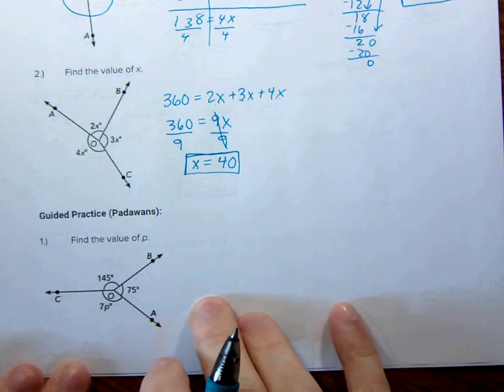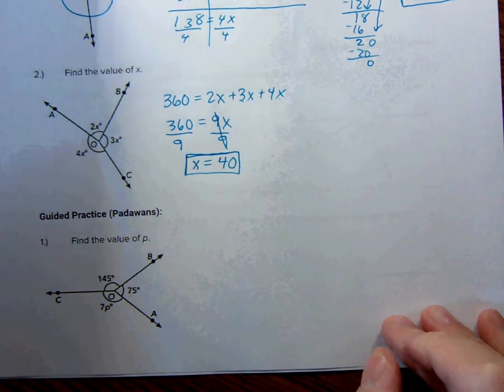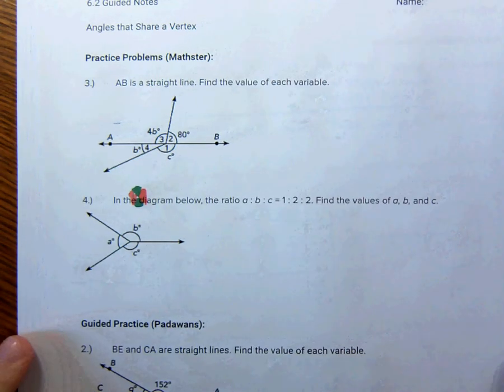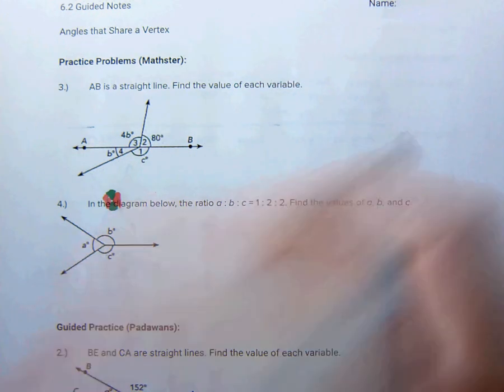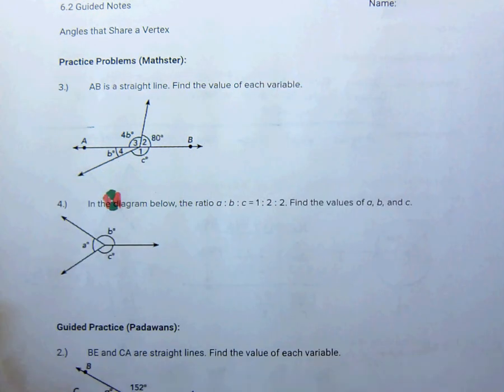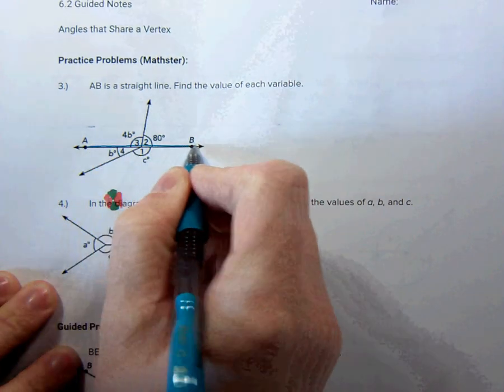You guys do this one. I think the one on the back as well. If I can move paper. Sorry about the large green and orange dots there. A, B is a straight line. Find the value of each variable. Now, one thing I want to point out about these questions, they don't add any information that is extraneous. Everything is important. Nothing is there to distract you or whatever.